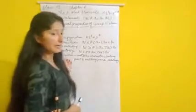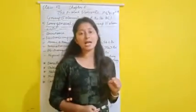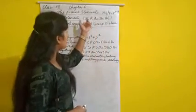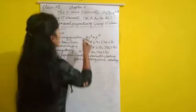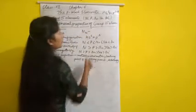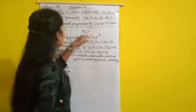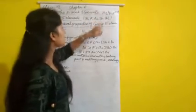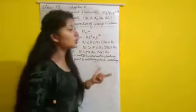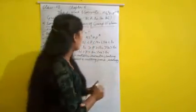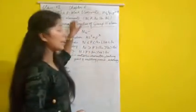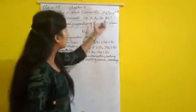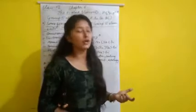Moving to physical properties: first of all, all these elements are polyatomic. For nitrogen, N2 is a diatomic gas and exists in the gaseous state. All other elements of this group exist in the solid state. So all group 15 elements are polyatomic — dinitrogen is a diatomic gas and all other elements exist in solid form.